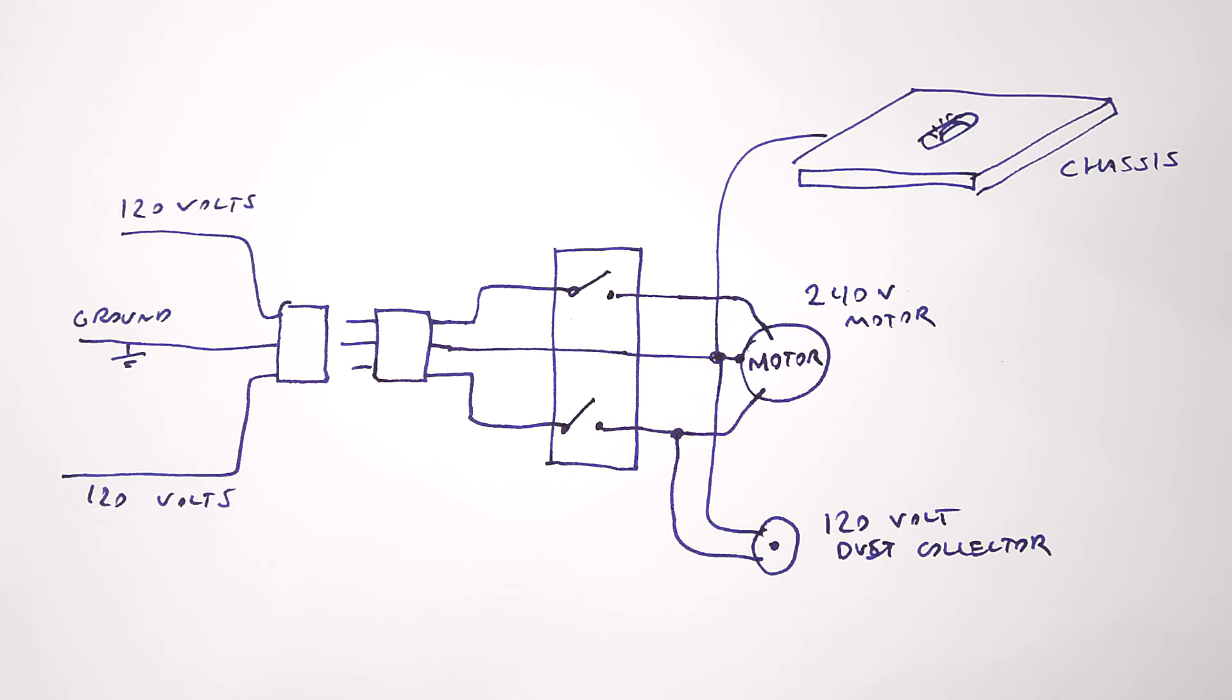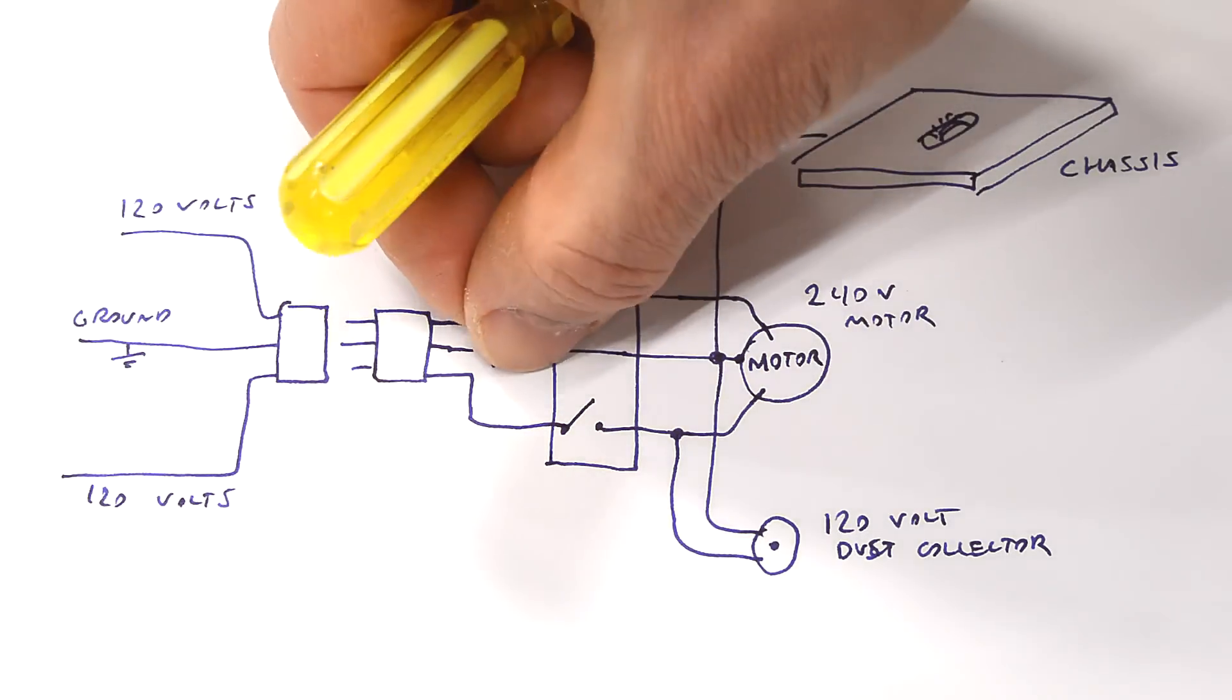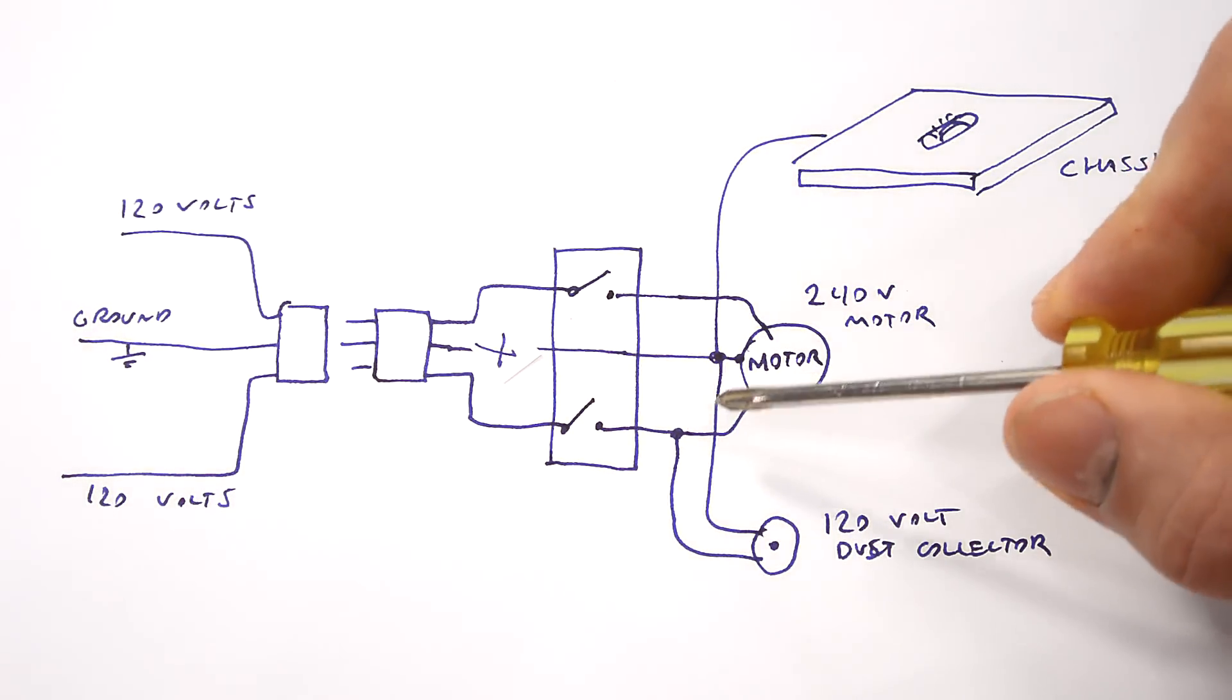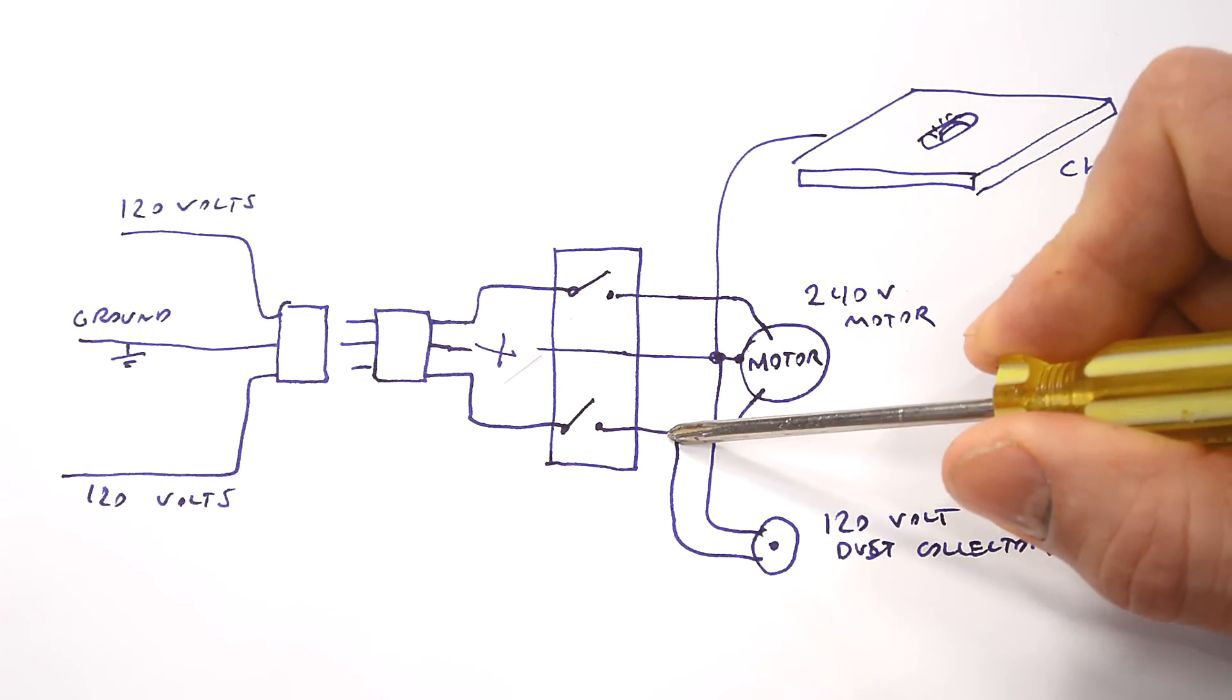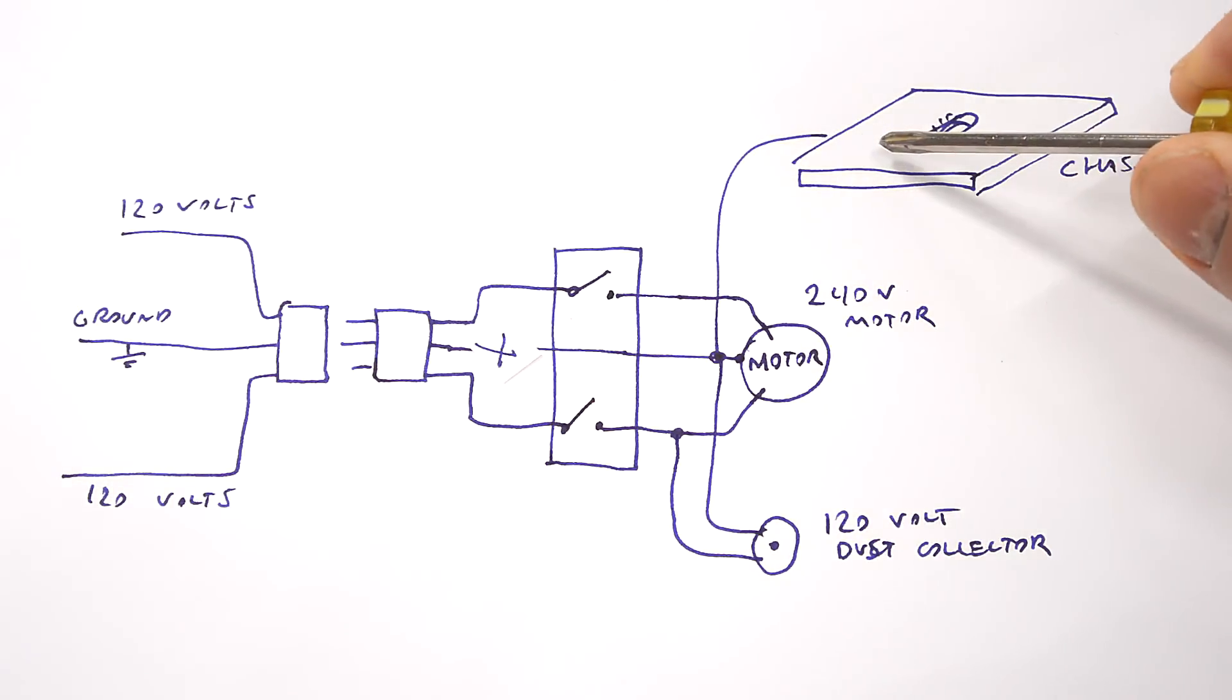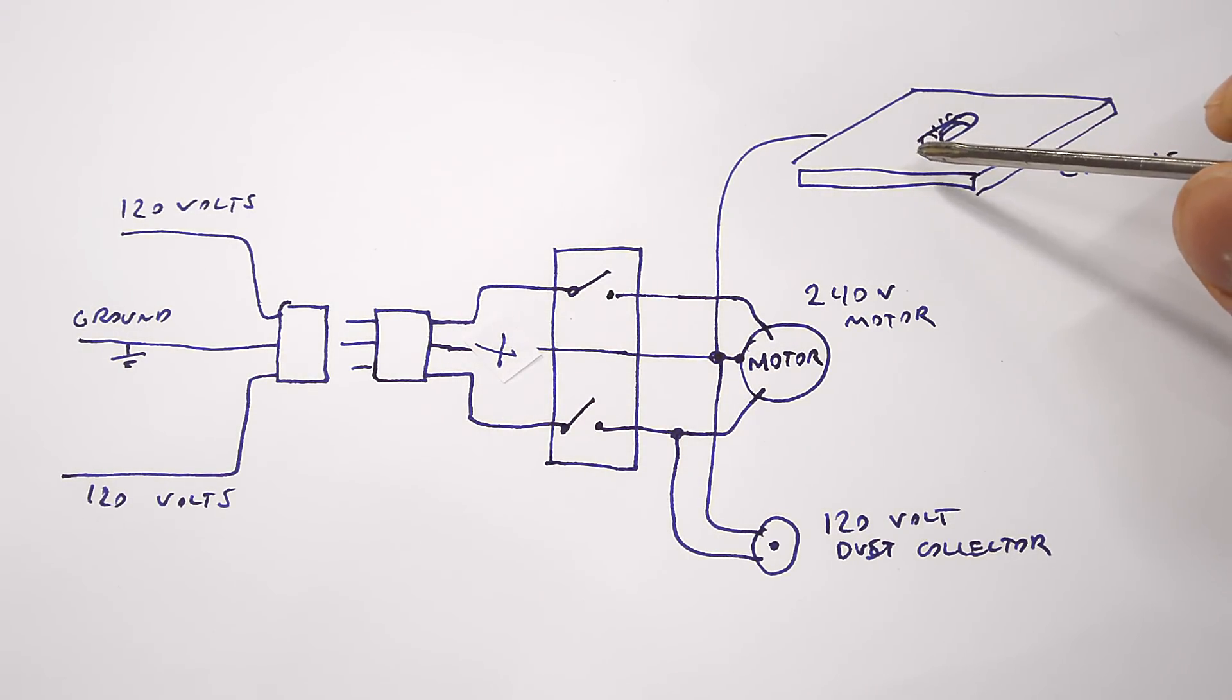But that's actually a bit of a bad idea because suppose ground were to break. Now we have this dust collector connected between one of the phases and ground which is connected to nothing except for the chassis of the table saw. Which means I could get zapped.